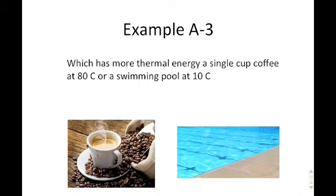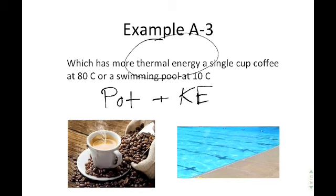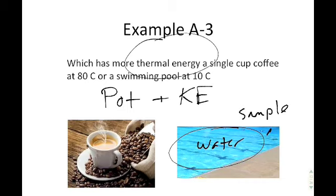Example A3: Which has more thermal energy — a single cup of coffee at 80 degrees Celsius, or a swimming pool at 10 degrees Celsius? Remember, thermal energy is the combination of both potential and kinetic energy. For an average swimming pool, there is so much more water that its potential energy overwhelms the fact that the coffee is hotter and has more kinetic energy per particle. So the swimming pool at 10 degrees Celsius has more thermal energy.